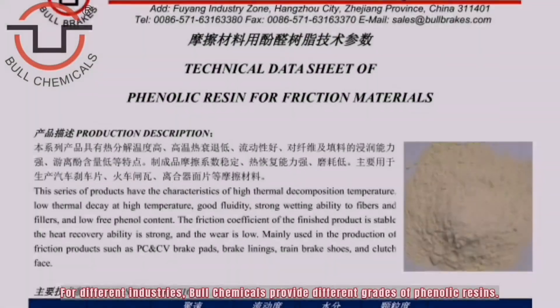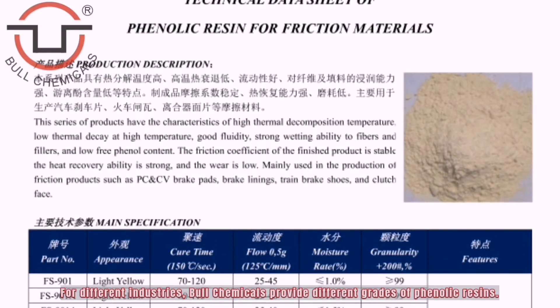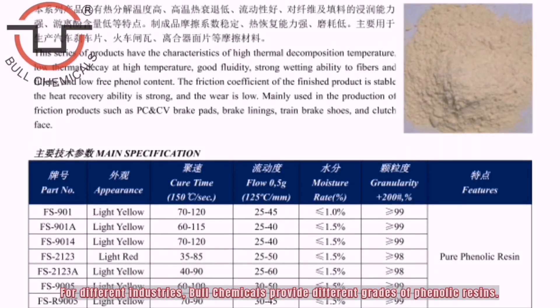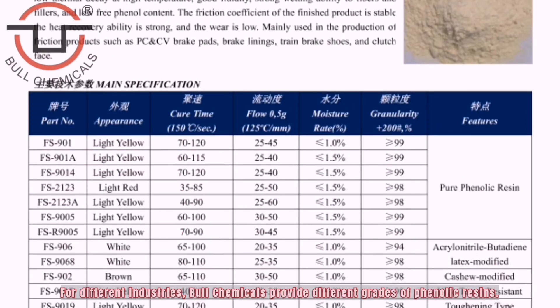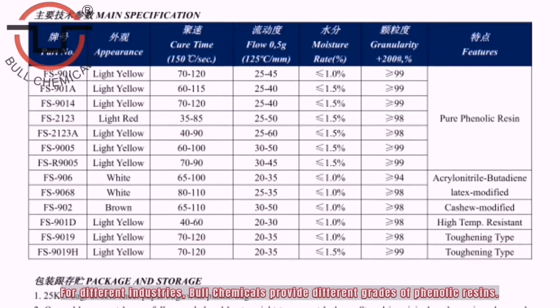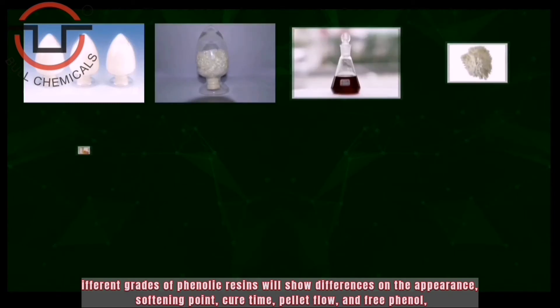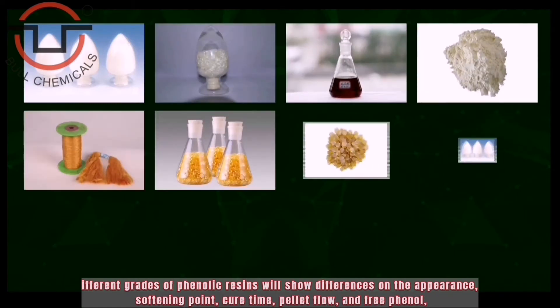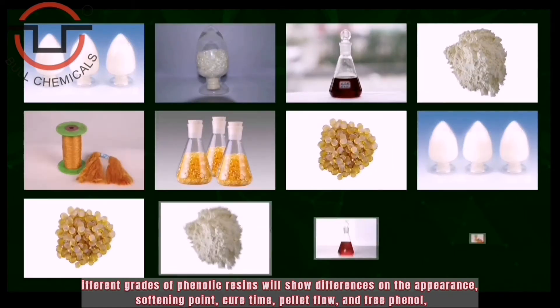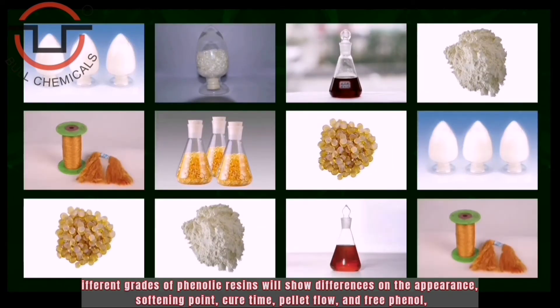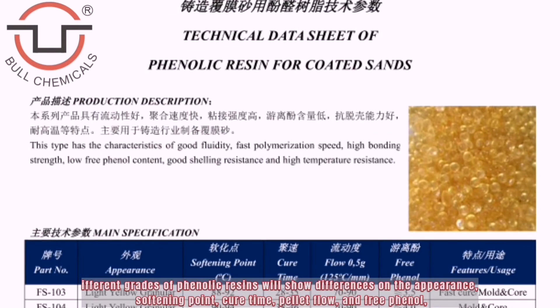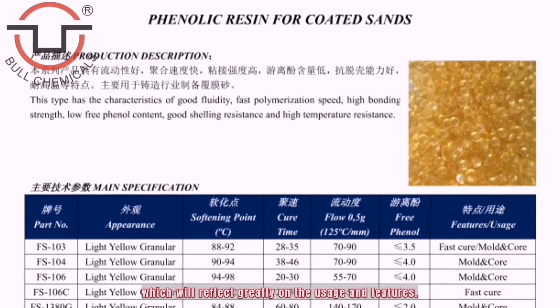For different industries, Bull Chemicals provides different grades of phenolic resins. Different grades of phenolic resins will show differences in appearance, softening point, cure time, pellet flow, and free phenol, which greatly reflect on the usage and features.